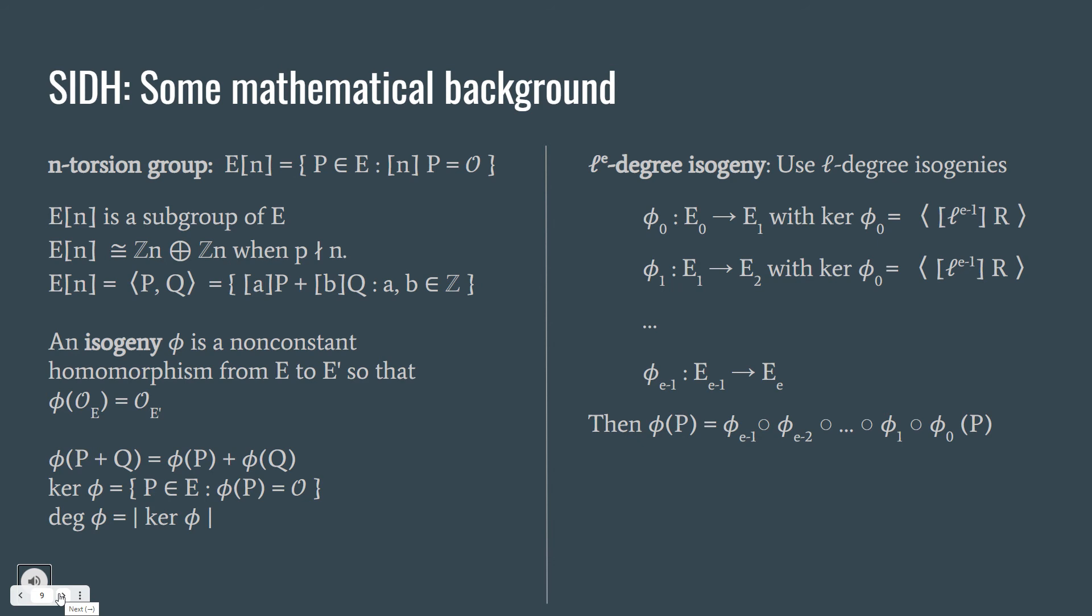An isogeny is a non-constant homomorphism from E to E prime so that it maps the identity element of E to identity element of E prime. It's a homomorphism so phi of P plus Q equals phi of P plus phi of Q. And the kernel can be defined as the set of points which is mapped to the identity element. And the degree of this phi is actually the cardinality of this kernel.